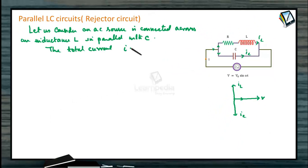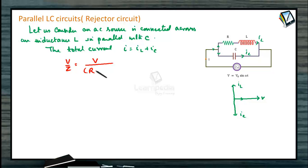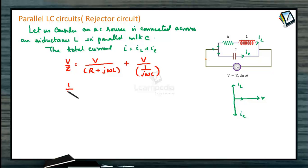The total current I is equal to IL plus IC. We can write V by Z. The total current is V divided by (R plus j·omega·L) plus V divided by (1 by j·omega·C). So 1 by impedance Z equals 1 by (R plus j·omega·L) plus j·omega·C.